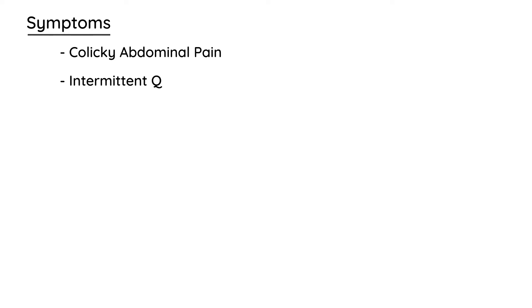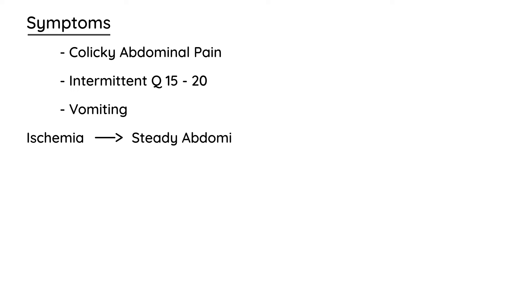Let's talk about the basic symptoms — how does a child present with intussusception? It's a very distinct pattern of colicky abdominal pain. In clinical vignettes, it's described as initially intermittent — maybe every 15 to 20 minutes the child will have this pain, and the pain will come and go. There will also be vomiting involved. Eventually, if there is ischemia — meaning the blood supply is cut off — that ischemia will lead to steady abdominal pain, which is a later sign.